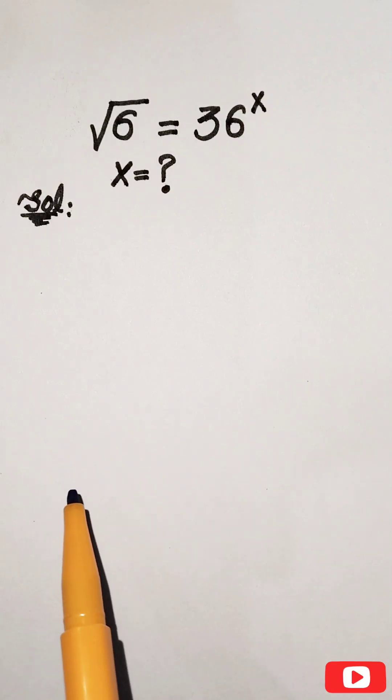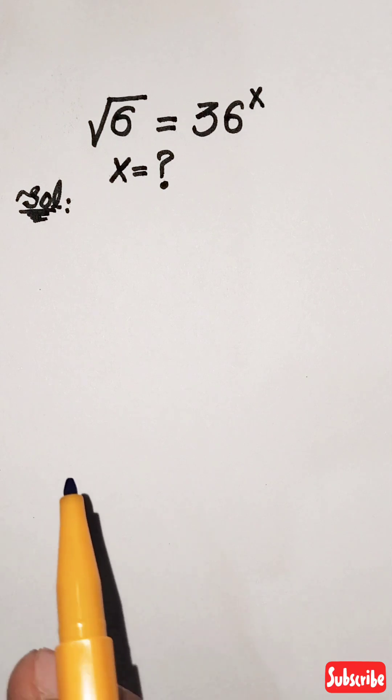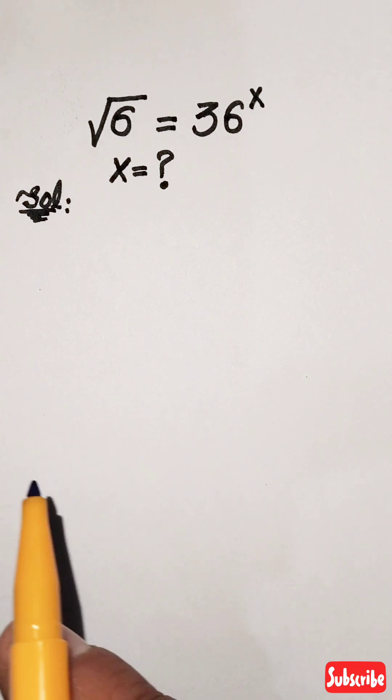This is our exponential equation: square root of 6 equals 36 raised to the power x. We have to find the value of x. First, we are going to square both sides.